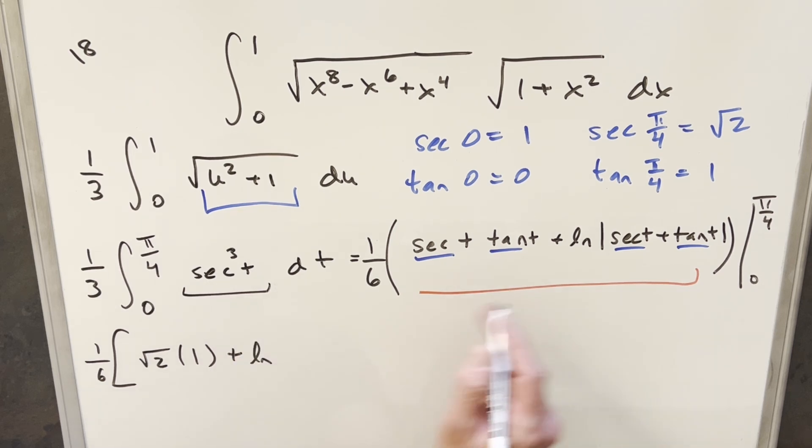natural log, again, square root of 2, plus 1. I'll drop my absolute value here. And then we're going to have minus evaluating at 0. Secant at 0 is 1,